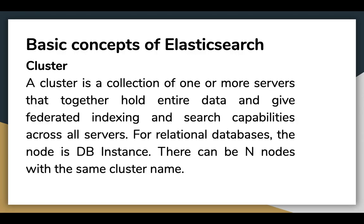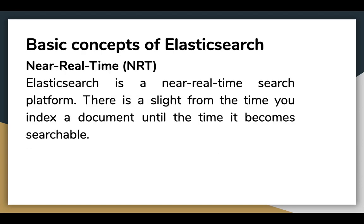Let's look at some basic concepts of Elasticsearch. First is Cluster. A cluster is a collection of one or more servers that together hold entire data and give federated indexing and search capabilities across all servers. For relational databases, the node is a DB instance. There can be N nodes with the same cluster name. Next is near real-time, one of the popular features of Elasticsearch. Elasticsearch is a near real-time search platform and there is a slight lag from the time you index a document until it actually becomes searchable.